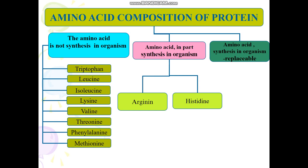Lysine is closely connected with the formation of blood; its deficiency leads to reduced number of red blood cells and hemoglobin. In addition, lack of lysine causes violation of bone calcification and depletion of muscles. Lysine is necessary for the growth of young organisms. The main source of lysine is milk protein casein, which contains 1.5% of lysine. It is also found in meat and animal products.